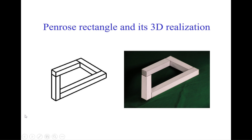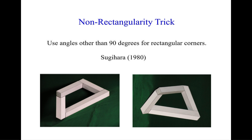For example, this is a picture of an impossible object called the Penrose rectangle and its 3D realization. I made it from paper using a trick which I found. The actual shape can be understood if we change our viewpoint. The trick here is that we use angles other than 90 degrees where they look rectangular. So I call this the non-rectangularity trick.